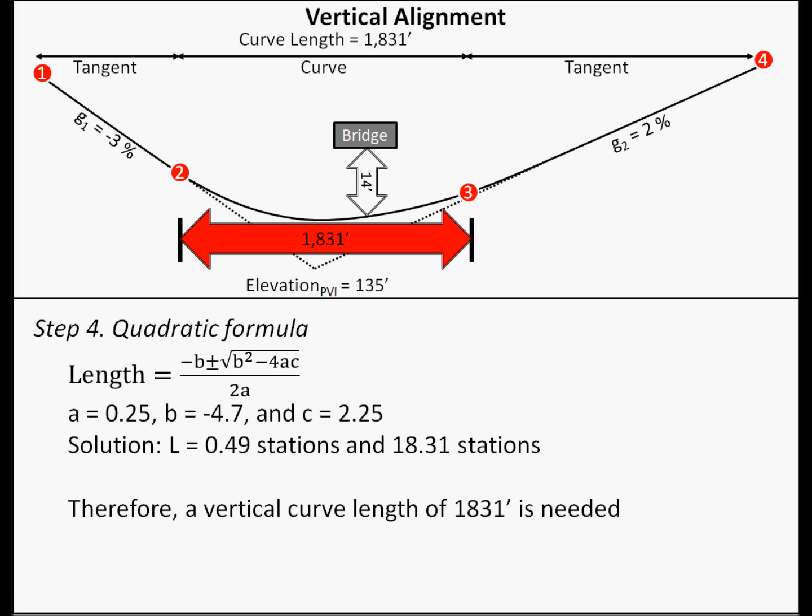For the quadratic formula, we will input 0.25 for a, negative 4.7 for b, and 2.25 for c, and find a solution of 0.49 and 18.31 stations, or 49 feet and 1,831 feet.